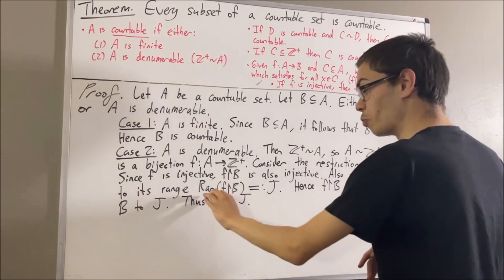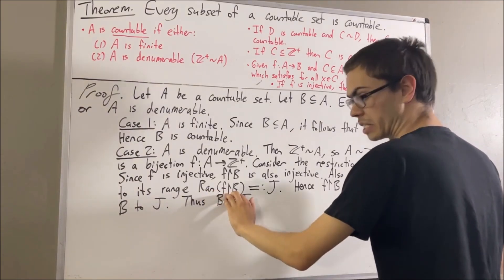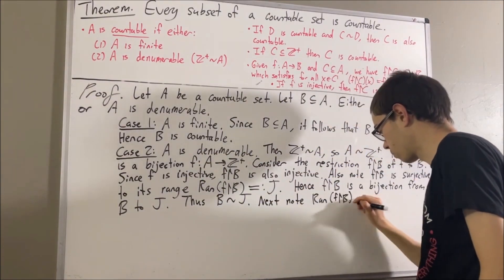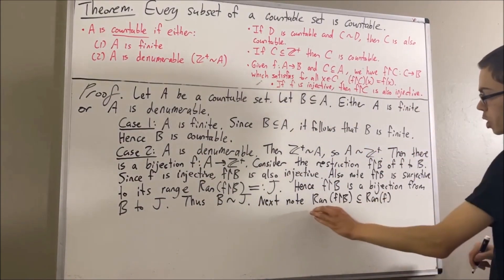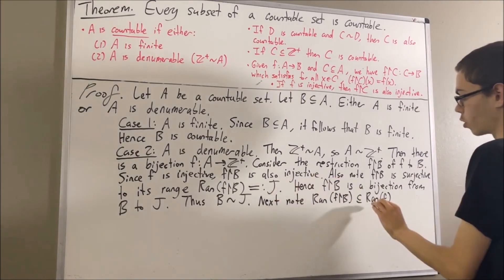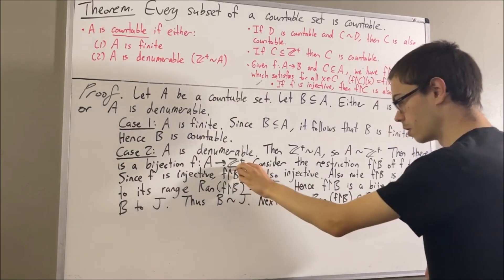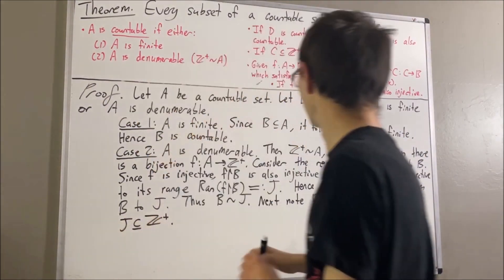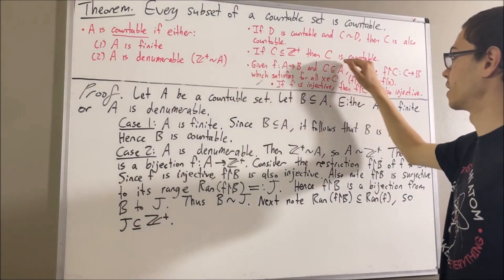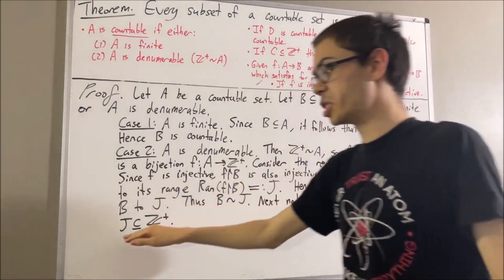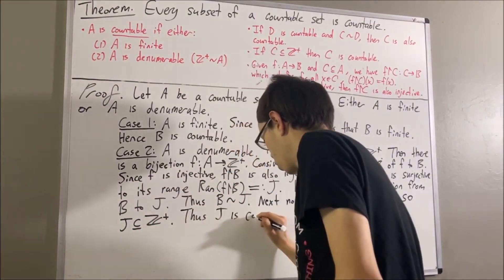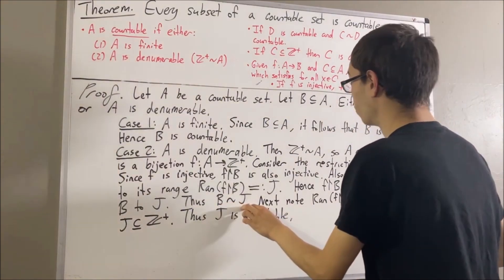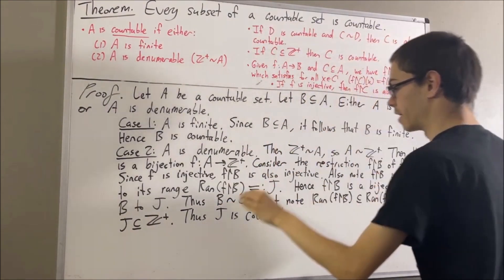It's not a surprise that the range of the restriction of F to B is a subset of the range of F — I'll leave that for you to verify. The range of the restriction of F to B equals J, and the range of F equals the positive integers, so J is a subset of the positive integers. We know that every subset of the positive integers is countable, so J is countable. Since J is countable and there is a bijection from B to J, by our first fact regarding countable sets, B is countable.